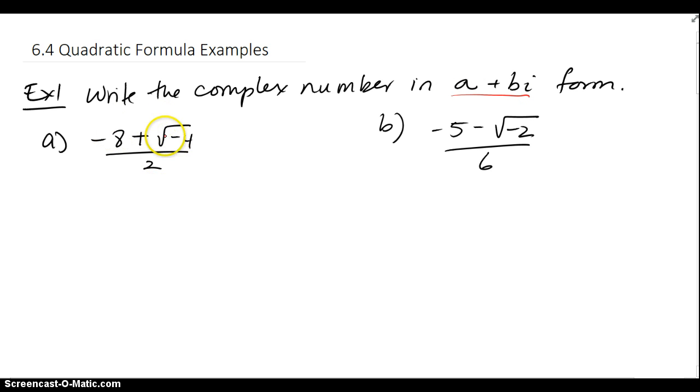We're going to look at part a, and the first thing we always want to do is analyze what gets spit out from the radical or the square root, and in this case we get a 2i.